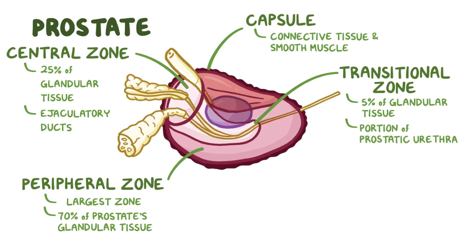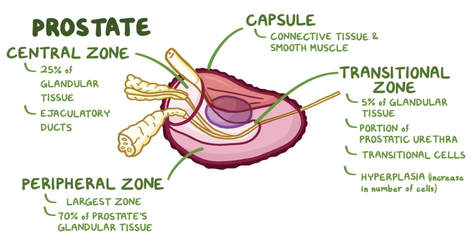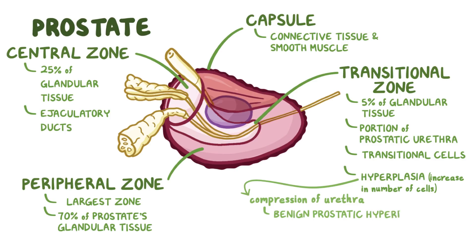The transitional zone gets its name because it contains transitional cells, which are also found in the bladder. The transitional zone undergoes hyperplasia, or an increase in the number of cells, in a large percentage of older men, and that often leads to compression of the urethra. This is called benign prostatic hyperplasia, and is often considered a normal part of aging.